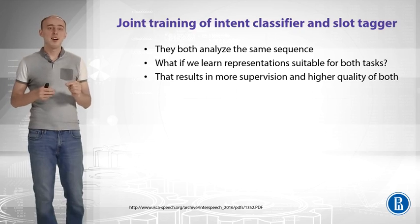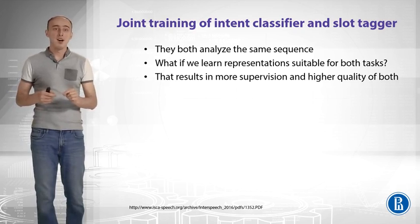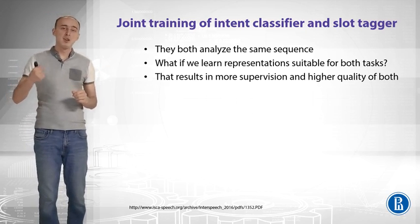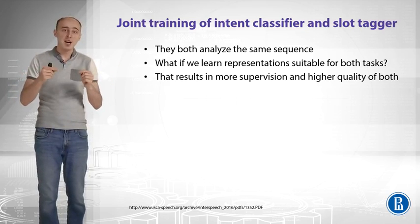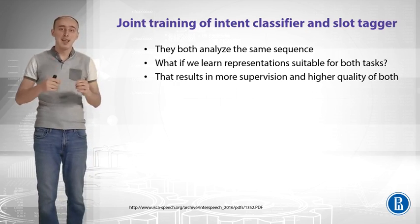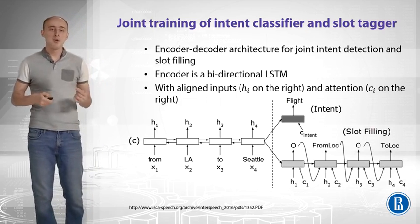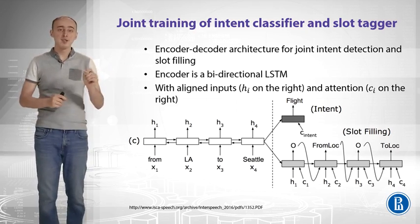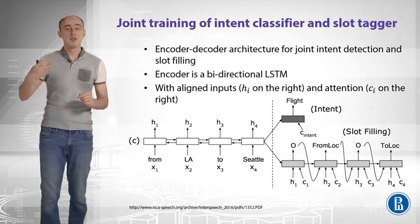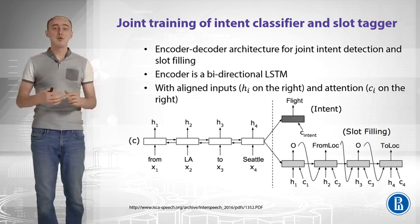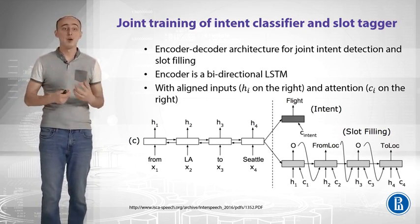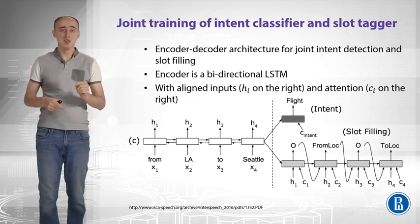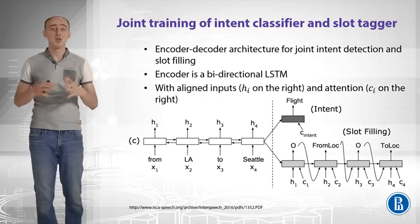You can actually train your intent classifier and slot tagger jointly — you don't need two separate models. Training this joint super-task allows the model to learn representations suitable for both tasks, provides more supervision during training, and results in higher quality. The joint model is still a sequence-to-sequence architecture using a bidirectional encoder: the last hidden state is used to decode both slot tags and the intent simultaneously, and training end-to-end for both tasks improves performance. The decoder receives aligned inputs (hidden states from the encoder) and attention vectors c.